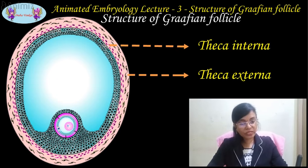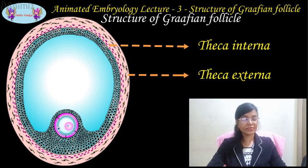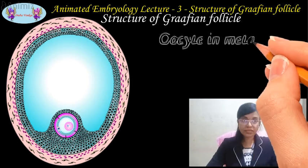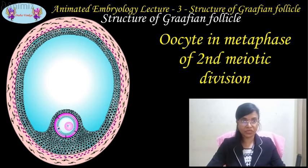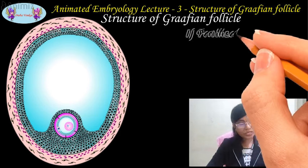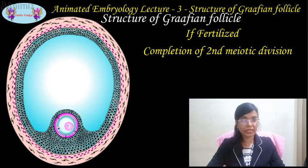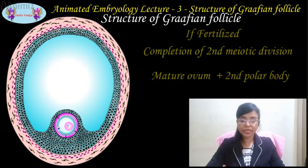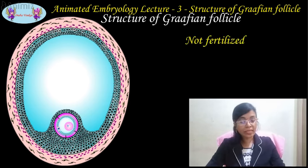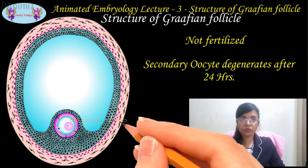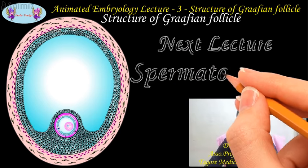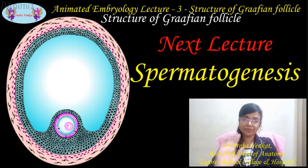Each and every structure we have seen in the Graafian follicle has its own unique functions. As mentioned at the beginning of this session, in the Graafian follicle the oocyte is resting in the metaphase of the second meiotic division. If fertilization occurs, the secondary oocyte completes the second meiotic division and gives rise to the mature ovum and the second polar body. If fertilization does not occur, the secondary oocyte degenerates 24 hours after ovulation. In the next session we will discuss spermatogenesis.